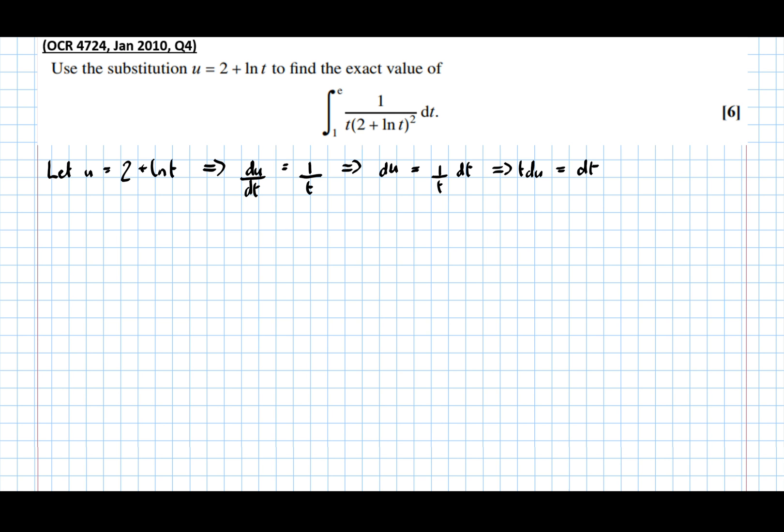So now performing the substitution, we get the integral between e and 1 of 1 over t. And notice that the substitution we made was u equals 2 plus log t. So what goes next is u squared. It's our substitution squared dt.